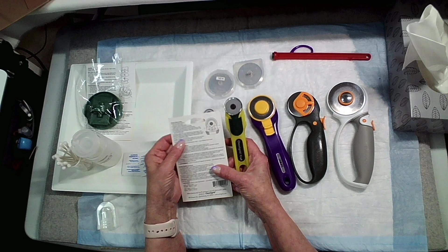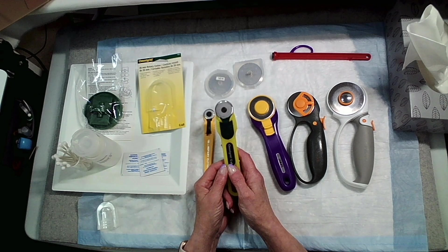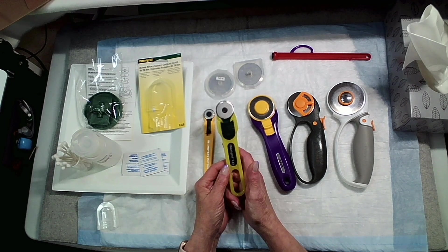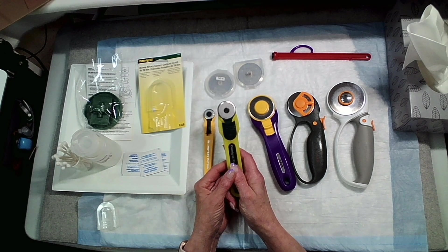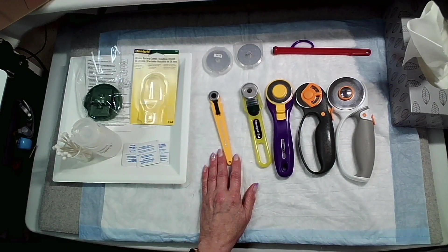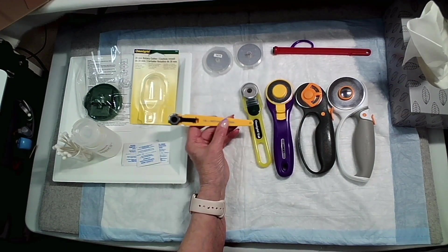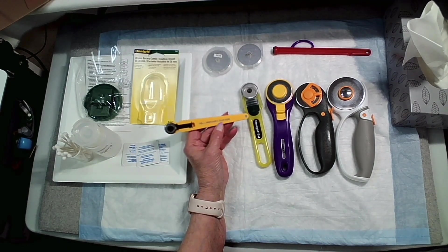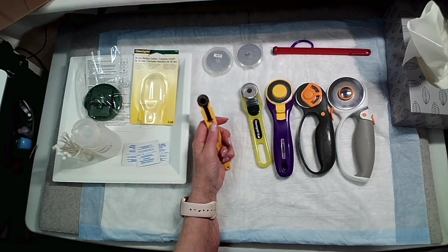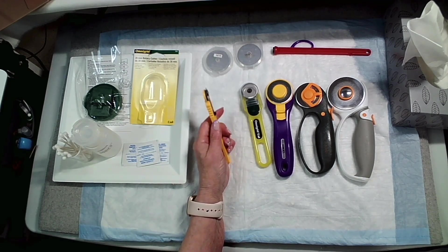It cuts single or multiple fabrics in any direction. For best results it says use chi blades. Most 28 millimeter blades will work with this cutter. The blade engages automatically when pressure is applied for cutting. Over the last couple of months I've been using this cutter and I really liked it for small projects.